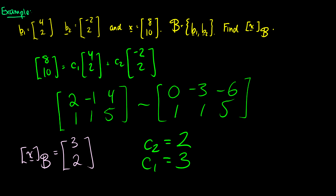In R2 the vector is (8, 10), but in the basis b it's represented as (3, 2). They're the same direction and magnitude — starting from the origin, the arrow is the same — but the way you get to that point based on how the space is laid out will be different.